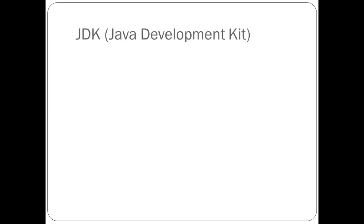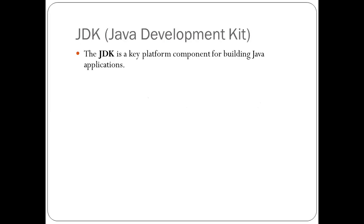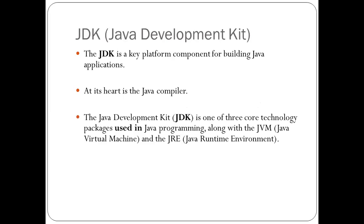Now let's look at what JDK is. JDK stands for Java Development Kit. The JDK is a key platform component for building Java applications, and at its heart is the Java Compiler. The Java Development Kit is one of three core technology packages used in Java programming, along with the JVM — Java Virtual Machine — and the JRE — Java Runtime Environment. We need all three to actually develop and run Java programs.